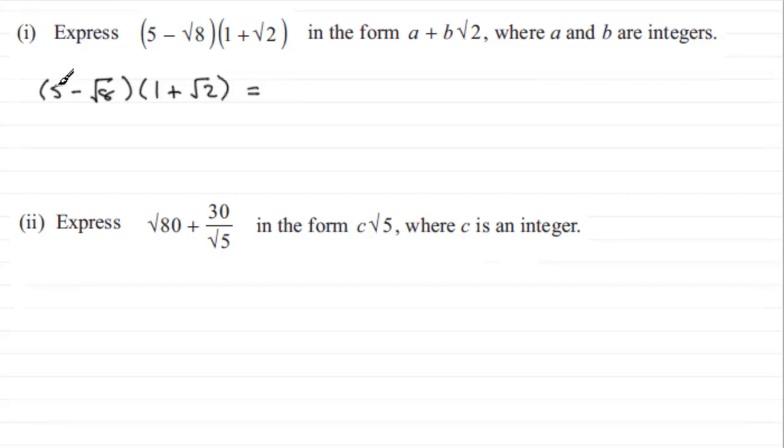We expand this in the usual way with brackets. We do 5 times 1, which is 5, then 5 times √2, which is +5√2. Then we've got -√8 times 1, so -√8. Finally, -√8 times +√2, which is -√16 (8 times 2).